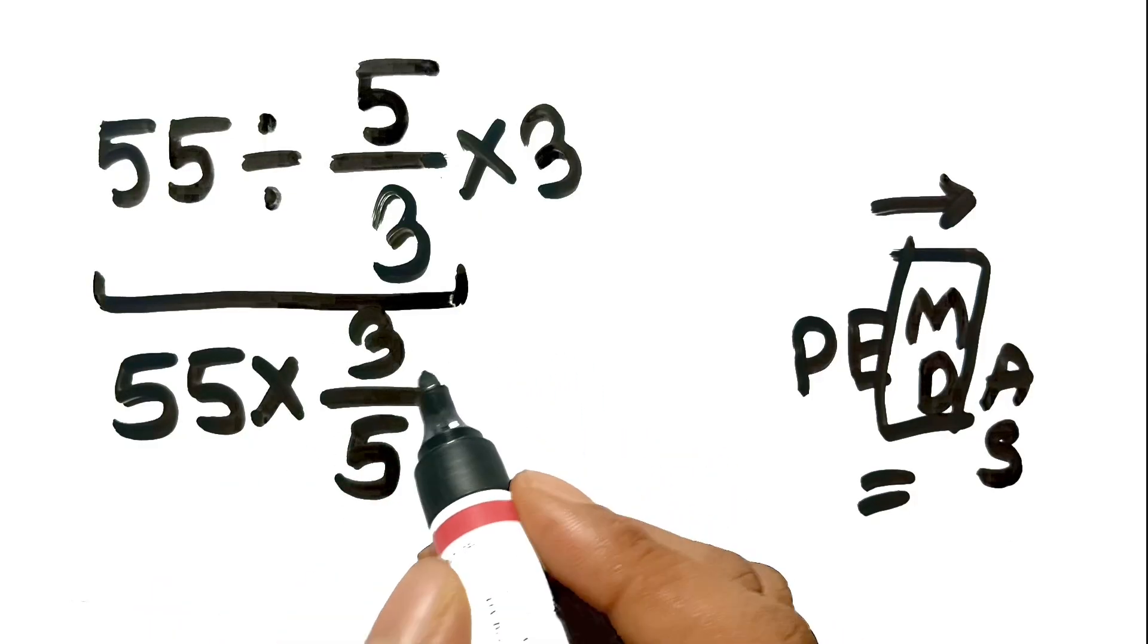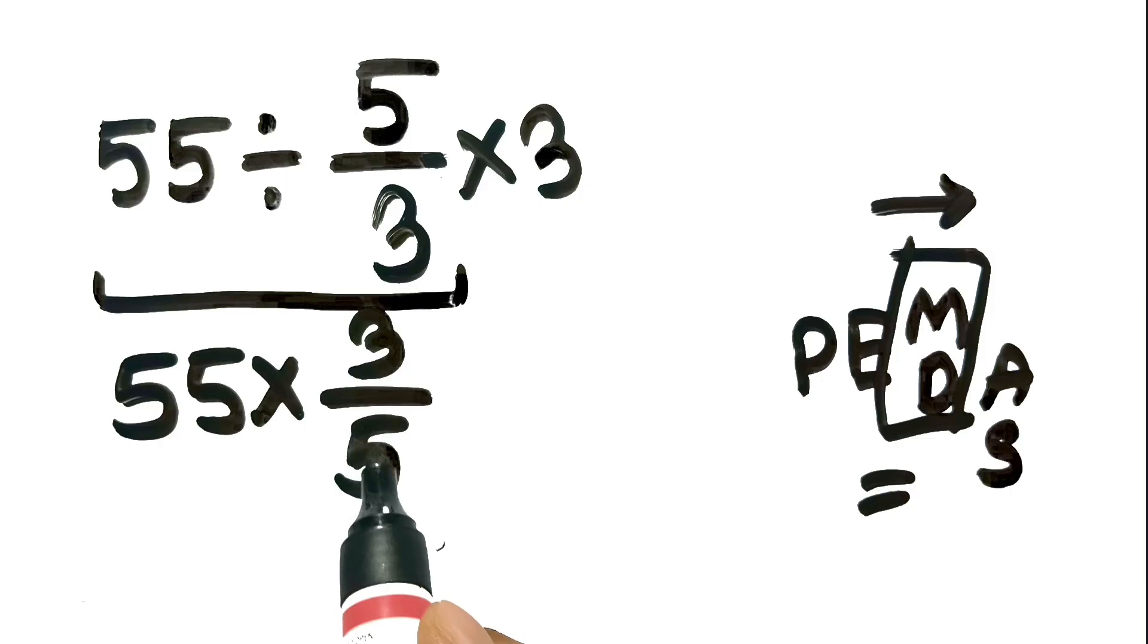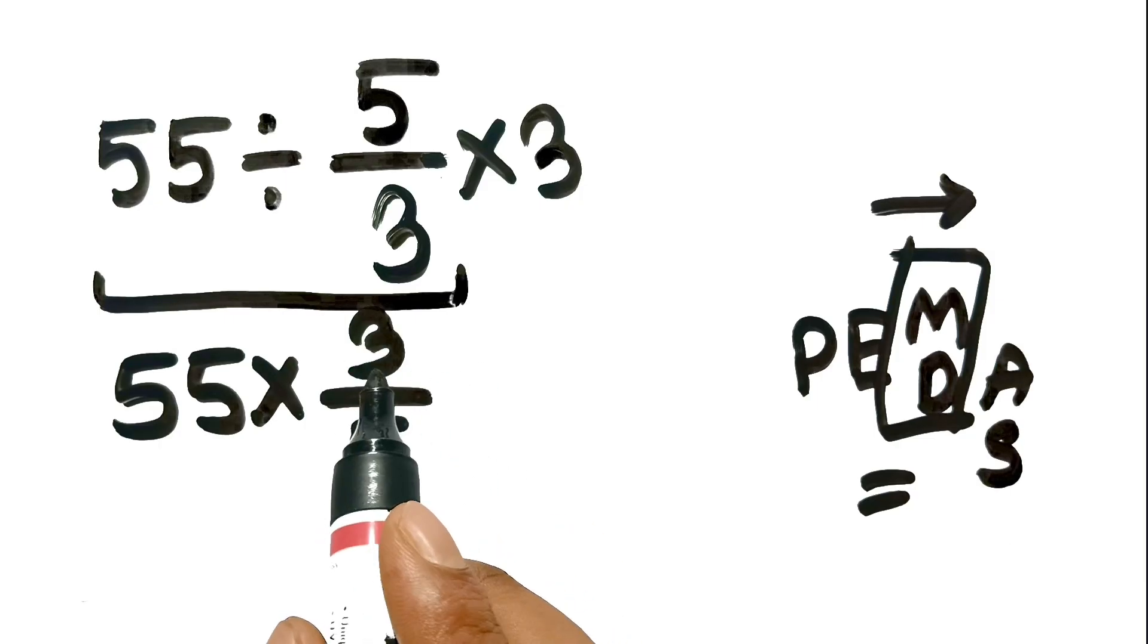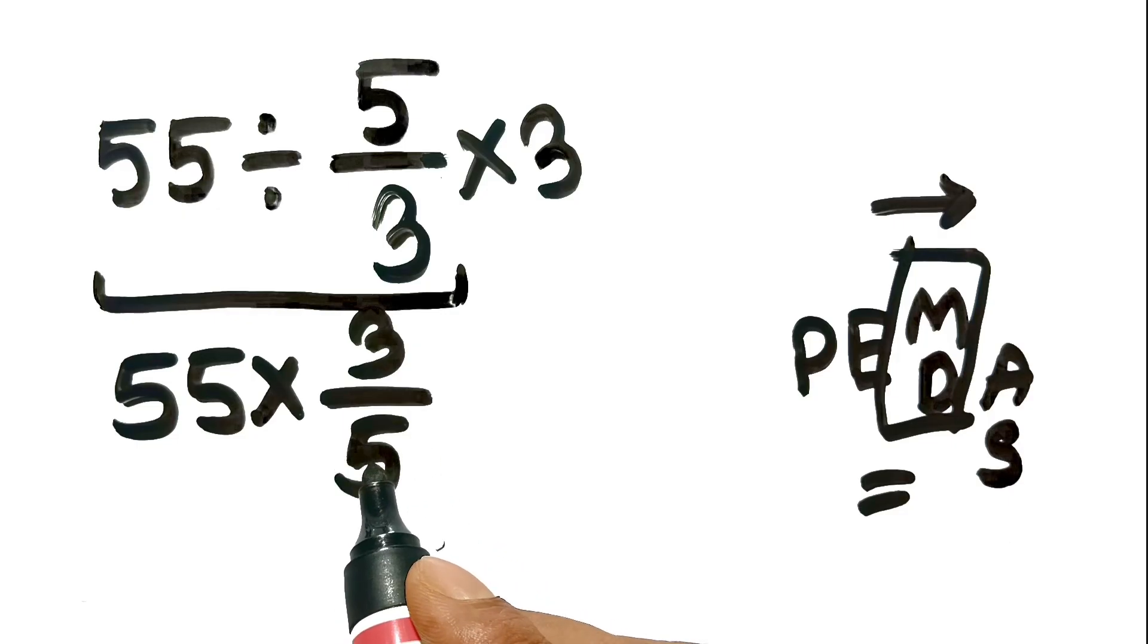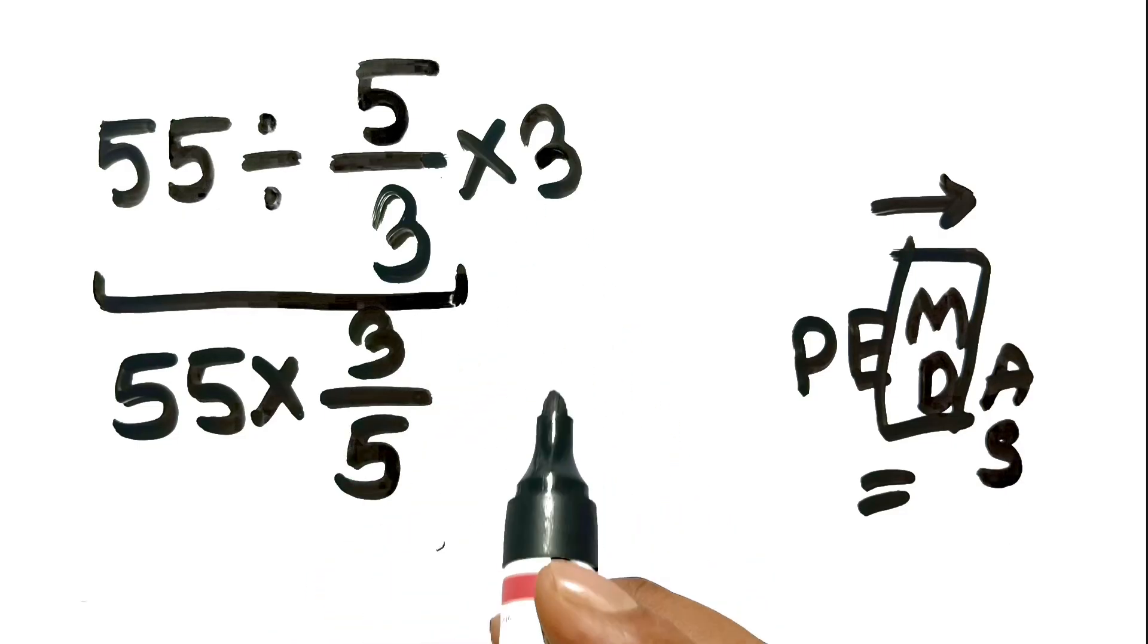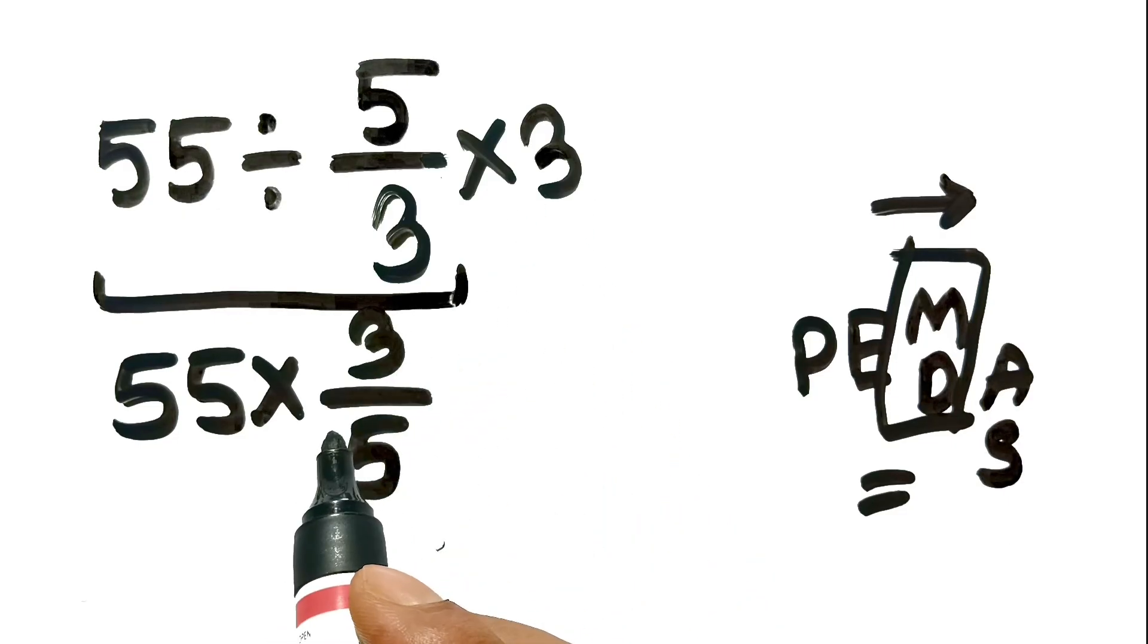Now, look closely. The 3 is now in the numerator. It is on top. It does not cancel with the other 3. In fact, we haven't even used the last 3 yet. First, let's finish the fraction math.